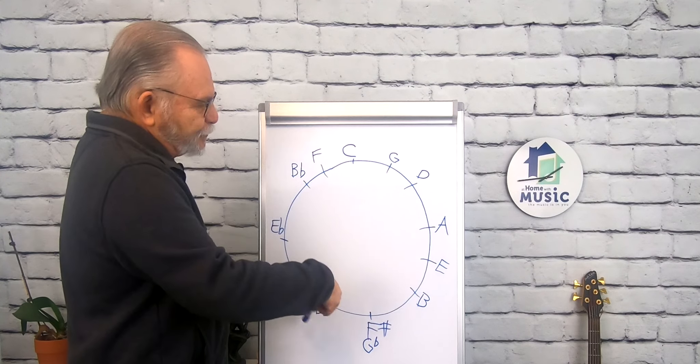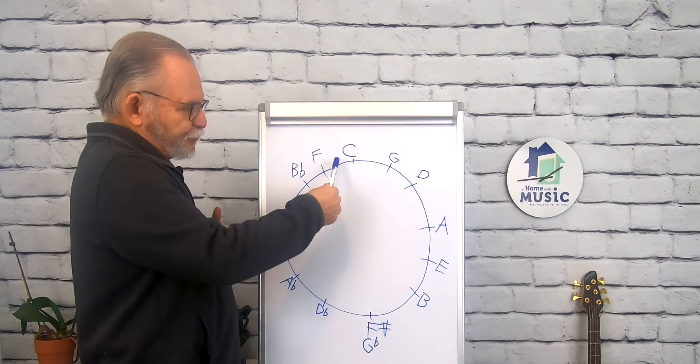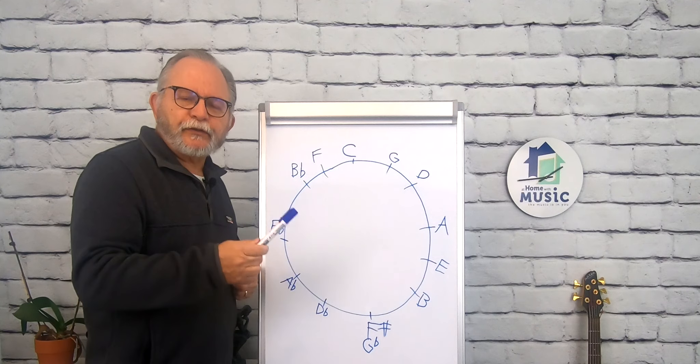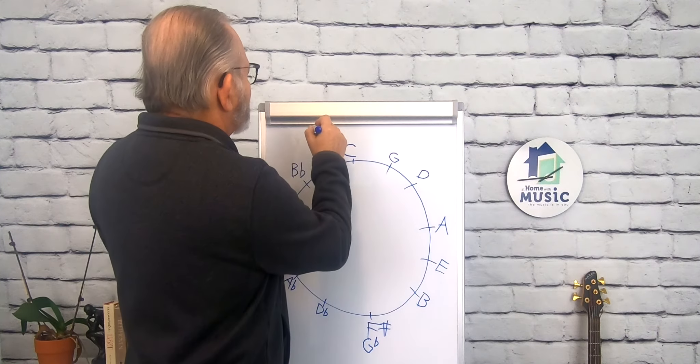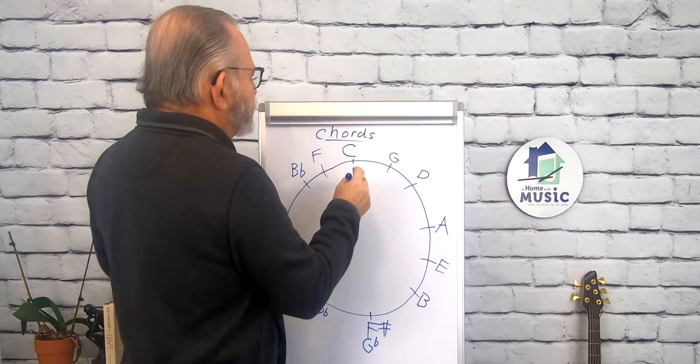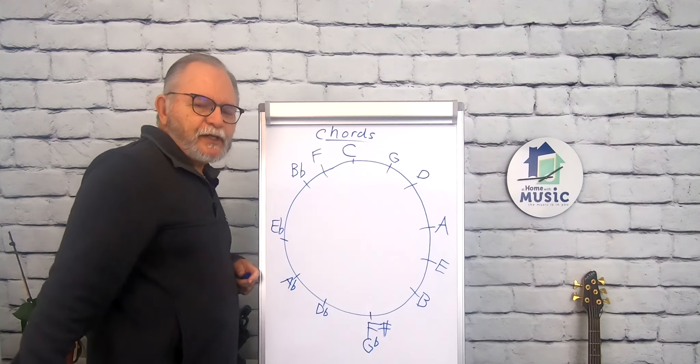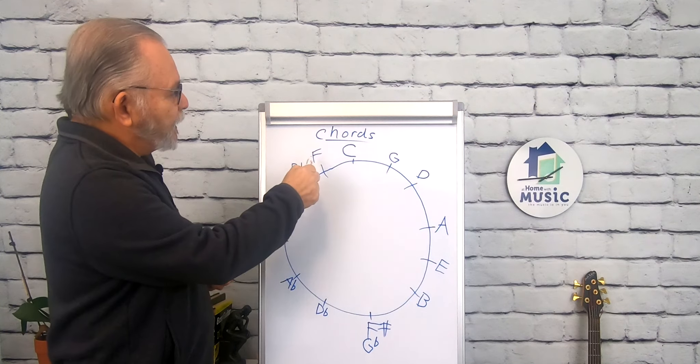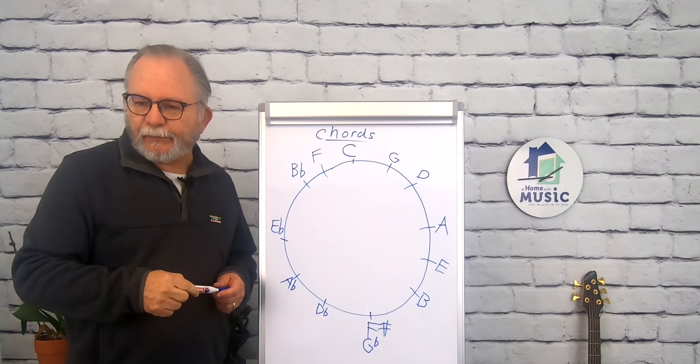We can use these notes to represent not only just the separate notes, C, G, D and so on, but we can also use them to represent chords. This becomes C major, G major, D major, A major, and so on, and F major, B flat major, E flat major, and A flat major.